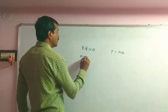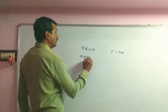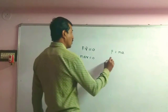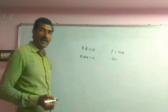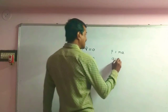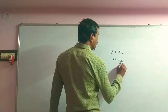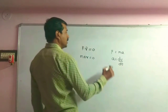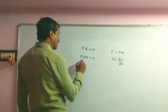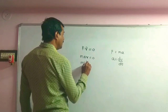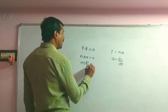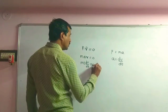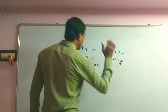So m into a·v equals zero. We know that acceleration is the rate of change of velocity — dv/dt. Substituting acceleration as dv/dt, we get: m · (dv/dt) · v equals zero.